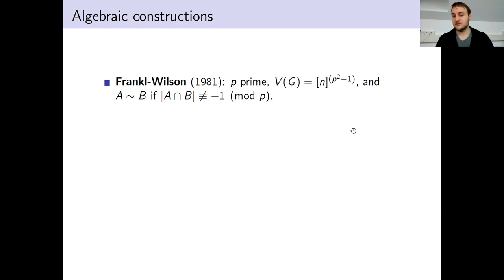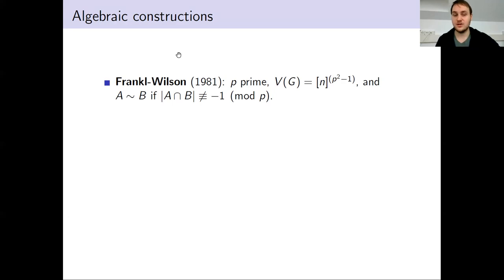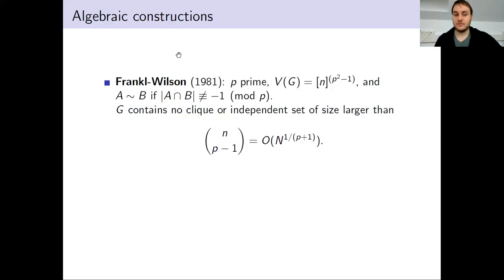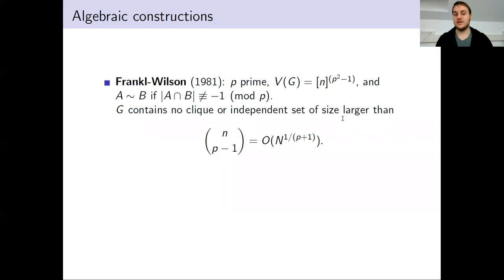Let me present the Frankl-Wilson construction. They took a prime P and considered the graph whose vertex set is all the P-squared-minus-one element subsets of an n-element ground set. They connect two such sets A and B by an edge if their intersection has size not equal to minus one modulo P. Using their famous Frankl-Wilson theorem on restricted intersections, they showed this graph does not contain a clique or independent set of size larger than n-choose-(P-minus-one), which expressed in terms of the number of vertices N is just N to the one over P plus one. So by increasing P and choosing appropriately, we can find explicit constructions which beat any polynomial bound.